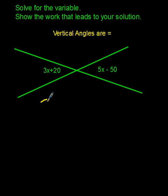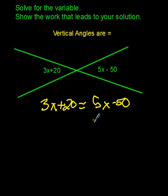I'm going to take this 3x plus 20 and set that equal to 5x minus 50. Now you can start solving this four different ways. It's kind of up to you how you want to solve it, but I like to keep my variables positive.